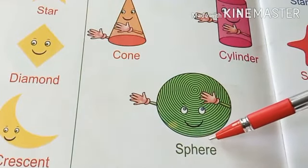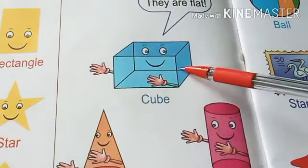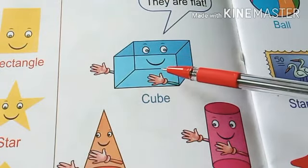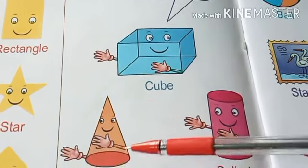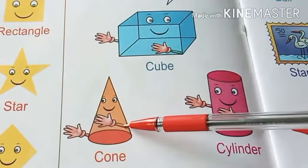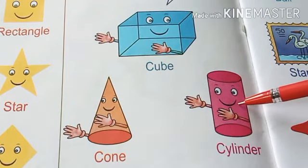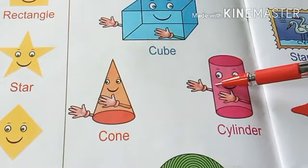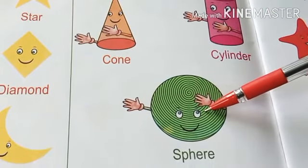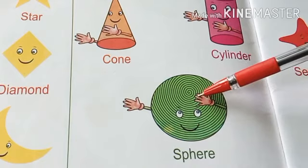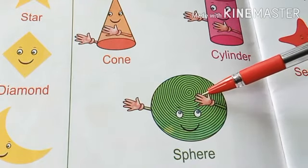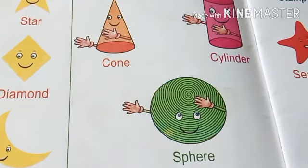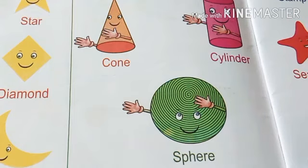And this is a sphere. Cube means ghan. Cone means shankु. Cylinder means silinder — like a cylinder. Sphere means gola. 2D shapes are flat and samtal, but 3D shapes are solid.